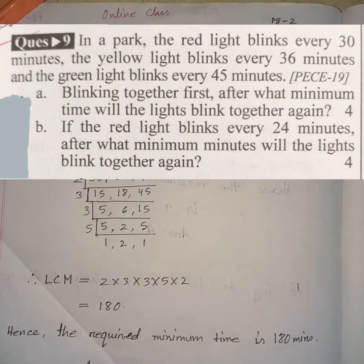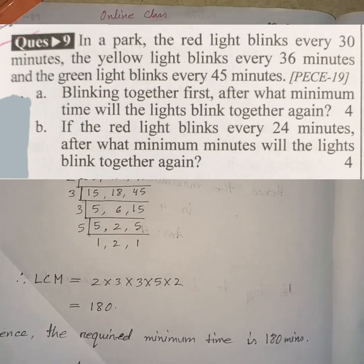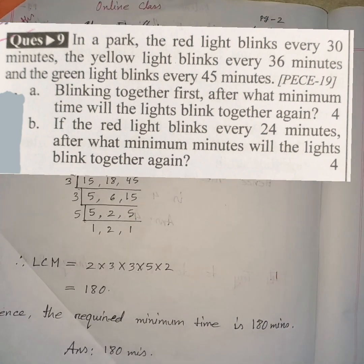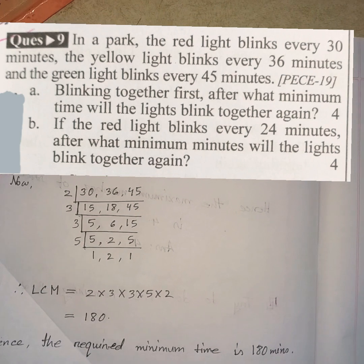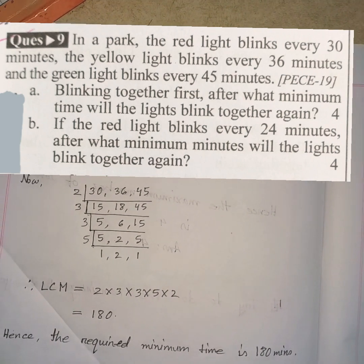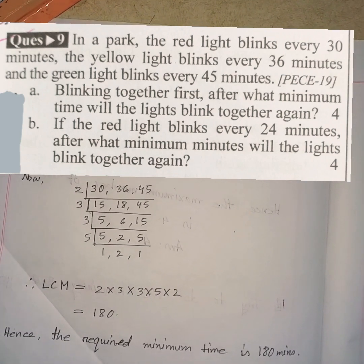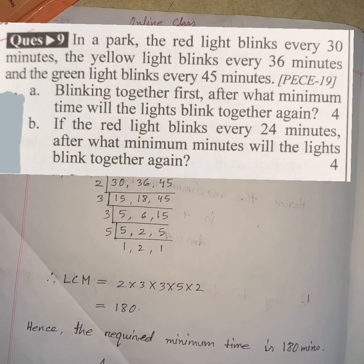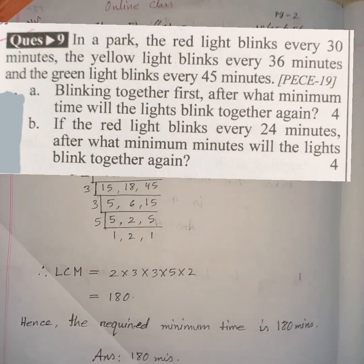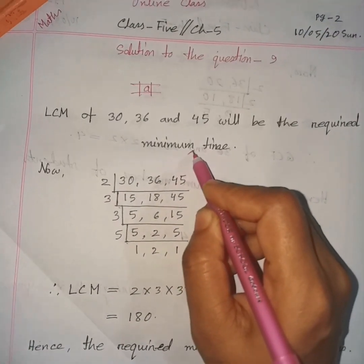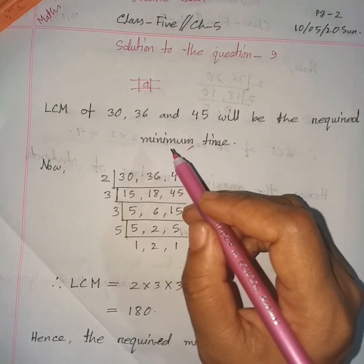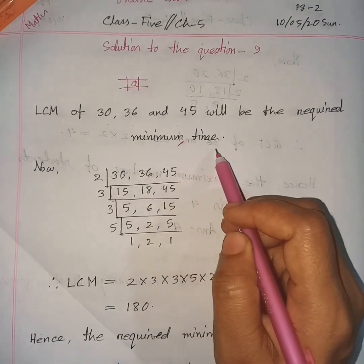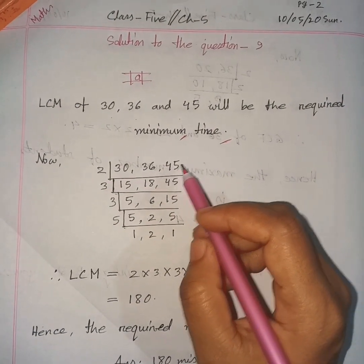Here you can see another creative question: in a park, the red light blinks every 30 minutes, the yellow light blinks every 36 minutes, and the green light blinks every 45 minutes. Question A is: blinking together first, after what minimum time will the lights blink together again? Since there is the word minimum, we have to find the LCM of 30, 36, and 45.